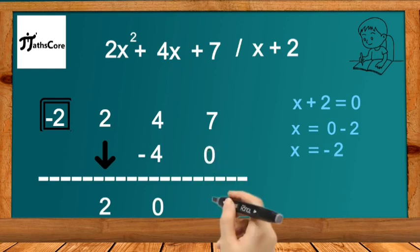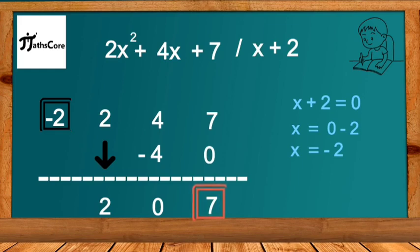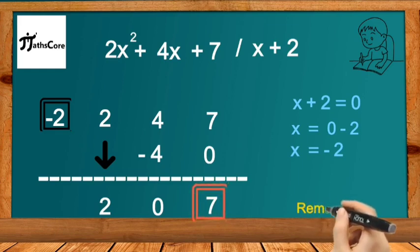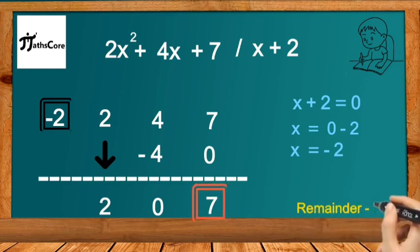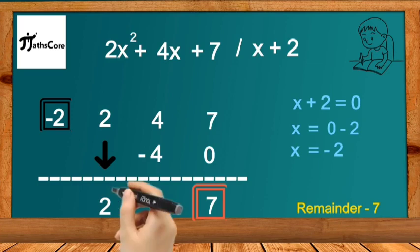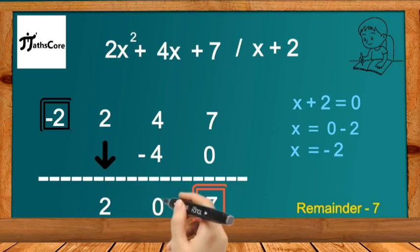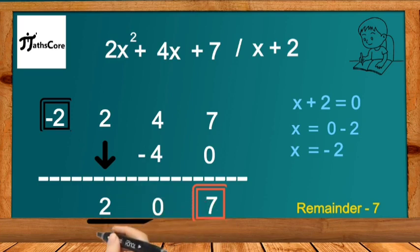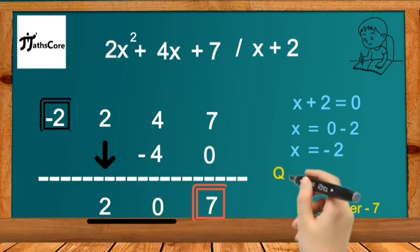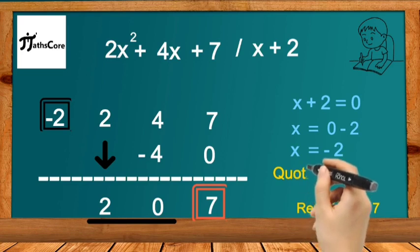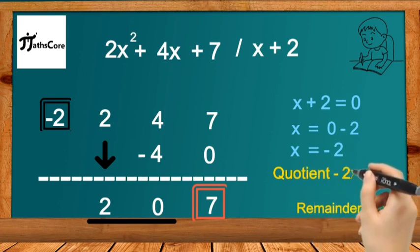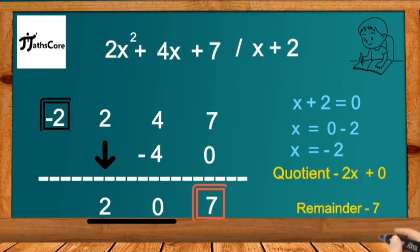Add this 0 to 7, so 7 + 0 = 7. This last number 7 is the remainder of this division. The first two terms we need to write in the form of a polynomial. Since there are two terms, the highest degree of the variable is 1, so the quotient will be 2x + 0, that is 2x.